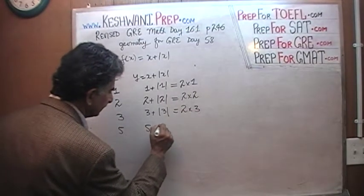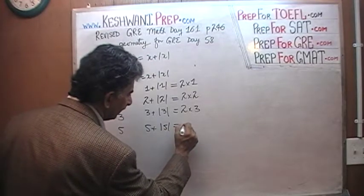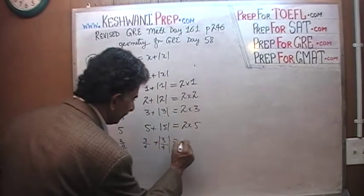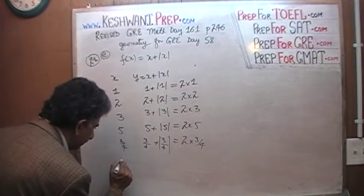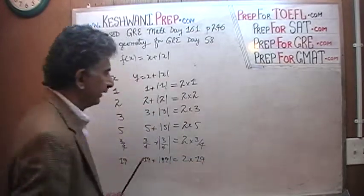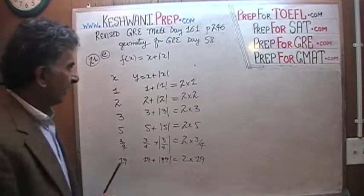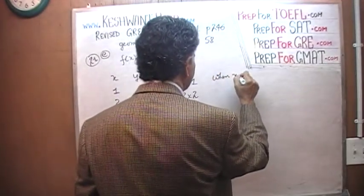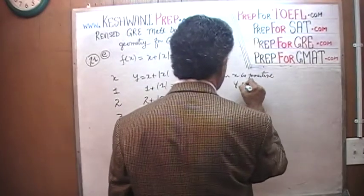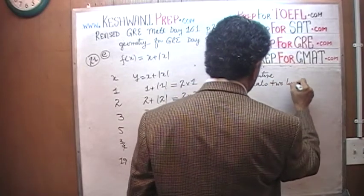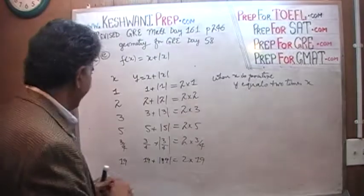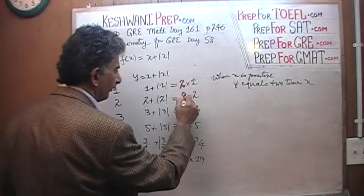When x is 5, we get 5 plus the absolute value of 5, which is simply 2 times 5. And when x is 17 or 19, we get 19 plus the absolute value of 19, which is simply 2 times 19. You get the idea. Do you see the pattern here? The pattern is that when x is positive — as long as x is positive — y equals 2 times x. No matter what positive value x assumes, y is always 2 times the amount.